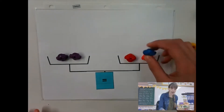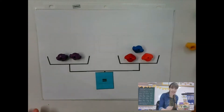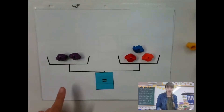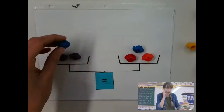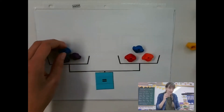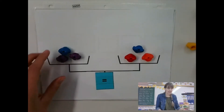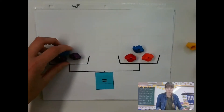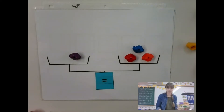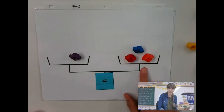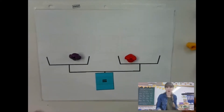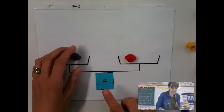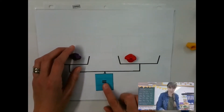If I were to add one more to that side, what would I have to do on my left side? I would have to add one more to my left side. What if I take two away from my left side? I have to take two away. I hope you understand what the equal sign means — it's very important in math.